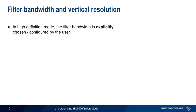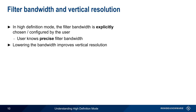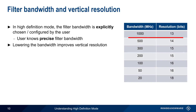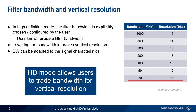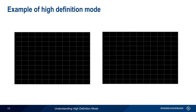In high-definition mode, the bandwidth of the digital filter is explicitly chosen or configured by the user, so the user precisely knows the bandwidth of the filter. As the bandwidth is reduced, vertical resolution improves. For example, lowering bandwidth to 1 GHz in a 12-bit oscilloscope provides the equivalent of a 1-bit improvement in vertical resolution. This resolution improves to 16 bits when the bandwidth is lowered to 100 MHz, and increases again to 18 bits when bandwidth is set to only 20 MHz. Note that these are only example numbers and will differ between oscilloscopes. High-definition mode allows users to trade bandwidth for vertical resolution — choosing a narrower bandwidth to improve vertical resolution, or giving up some vertical resolution in exchange for wider bandwidth.